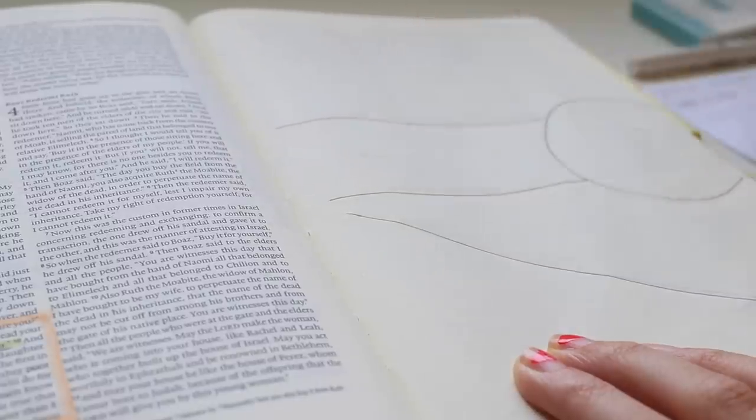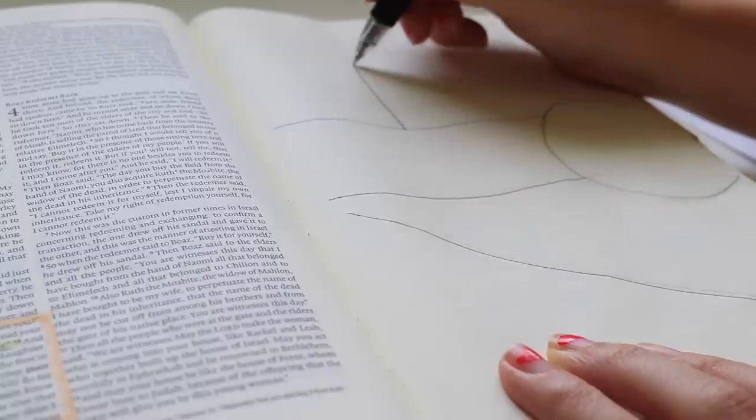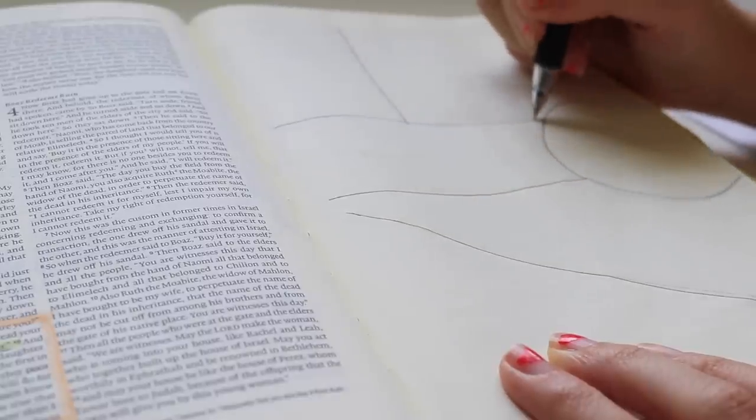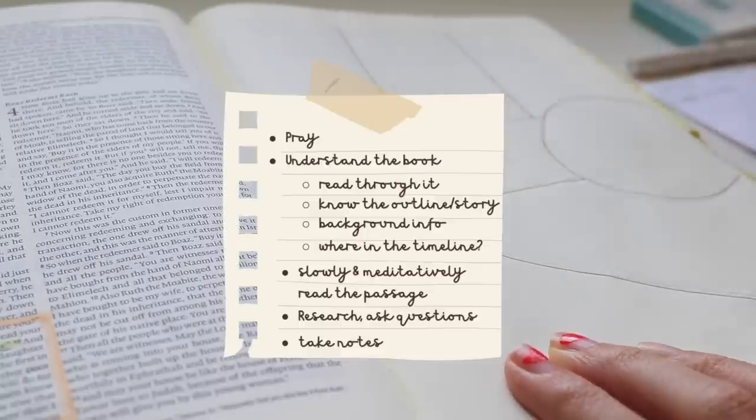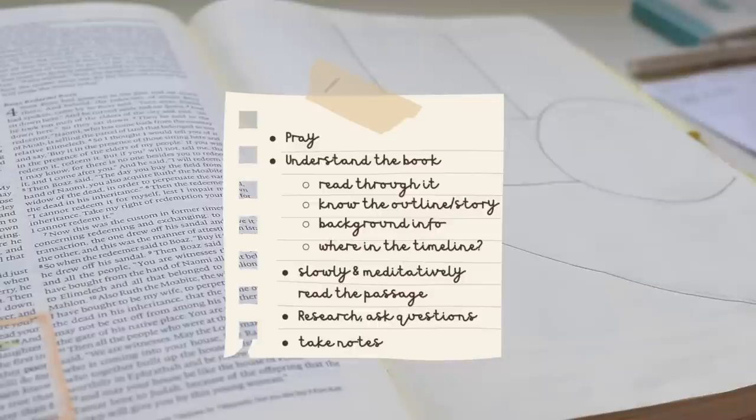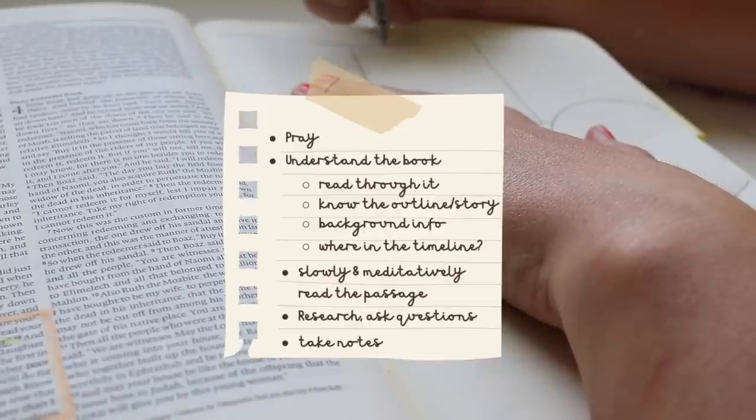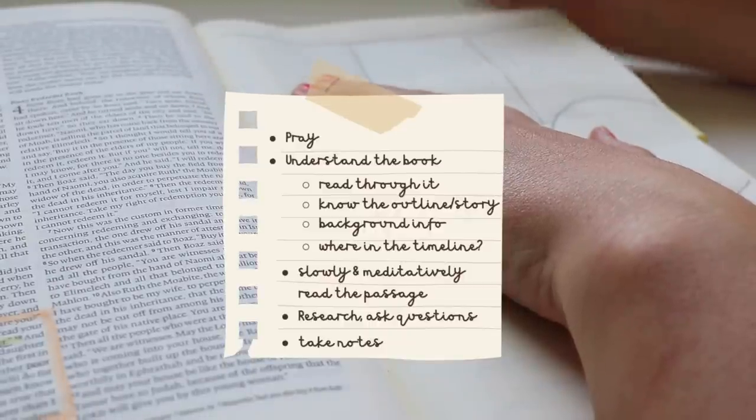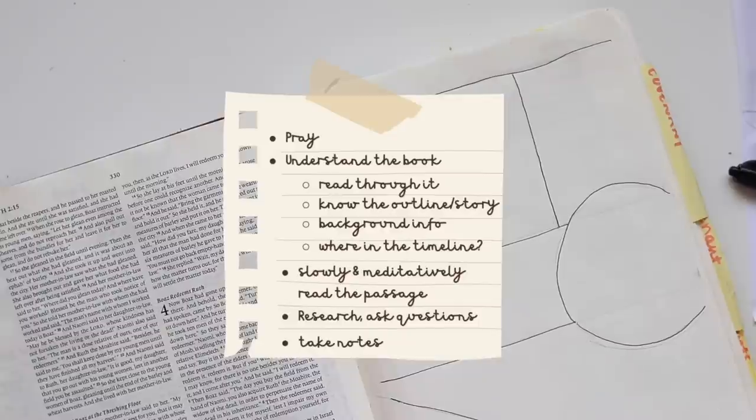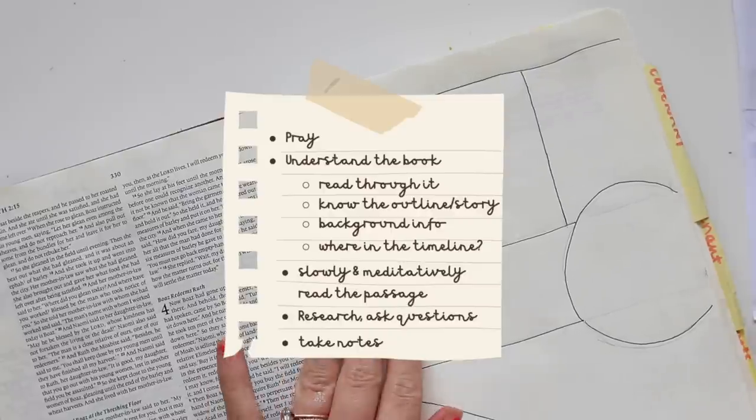Before I start any note-taking in my Bible, I do some things first. I'll put it up here with a little cute sticky note. The first thing I do is pray - I say 'Open my eyes, Lord,' and it can be as simple as that. Sometimes I even forget to pray, and then in the middle of my Bible reading I'm like, 'Oh my gosh Lord, I totally forgot to pray. Please be here with me, open my eyes,' because I know that in and of myself I can't understand God's word.